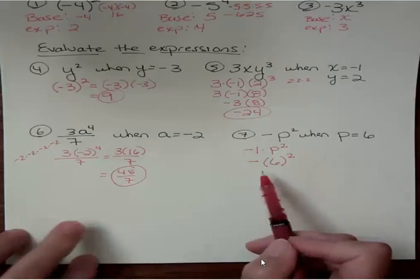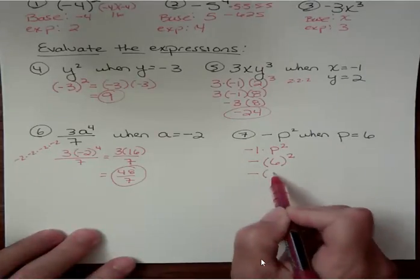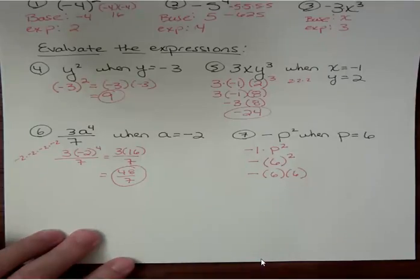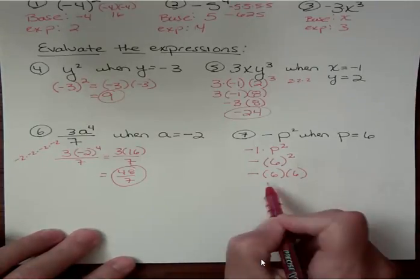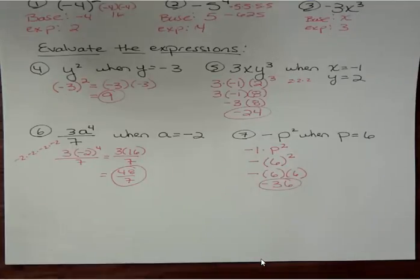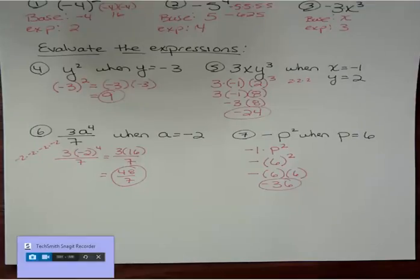Notice that that negative is out front, and so I have negative 6 times 6. That negative did not repeat. There's just 1. That makes it a negative overall, and I get negative 36. So that is evaluating an expression that contains exponents. Have a fantastic day. We'll see you next time.